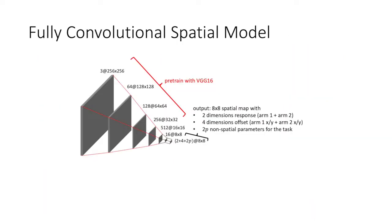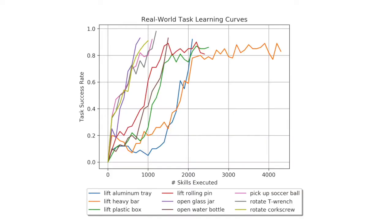To predict continuous arguments given an image input, we use a fully convolutional spatial model as our neural network architecture. For all real-world tasks, the system learns a policy from raw images taken by an overhead camera in roughly 4 to 10 hours of training.